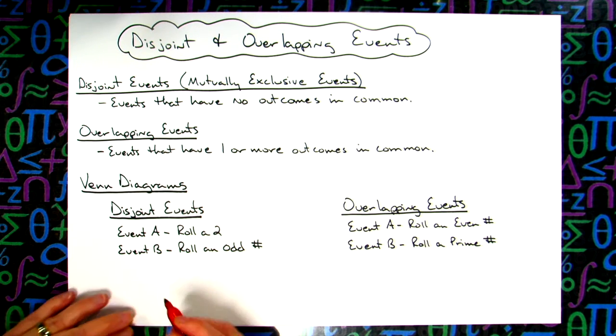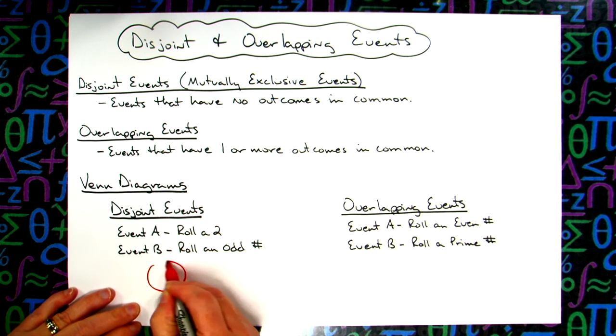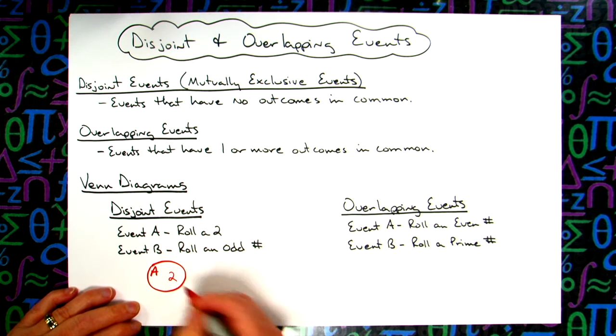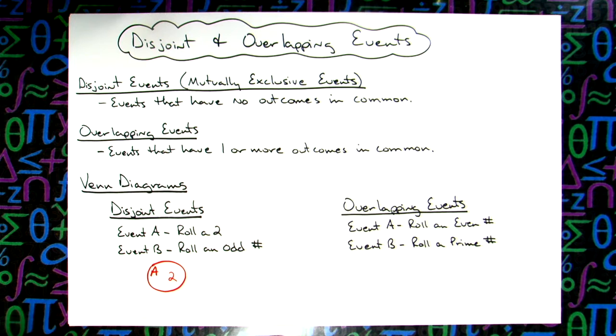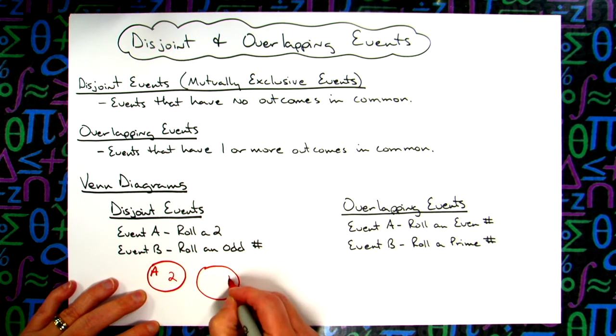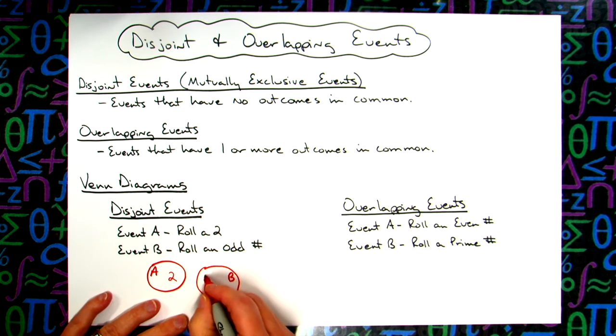If we wanted to represent this in a Venn diagram, my event A - well, event A, the only outcome I'm going to have is rolling a two. There is nothing that overlaps when I do event B in a Venn diagram form. It would be all the odd numbers that are on a dice: one, three, five.